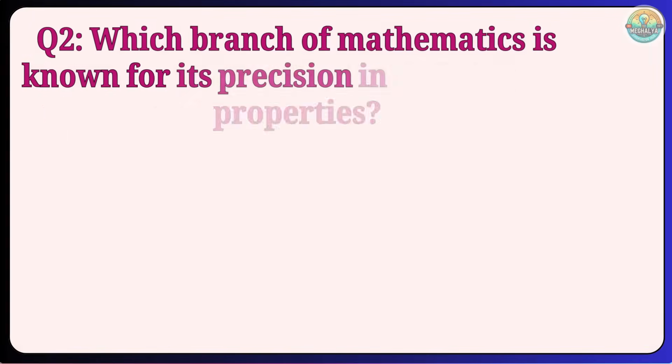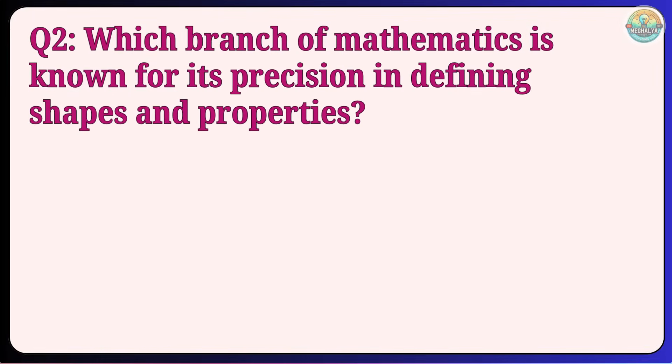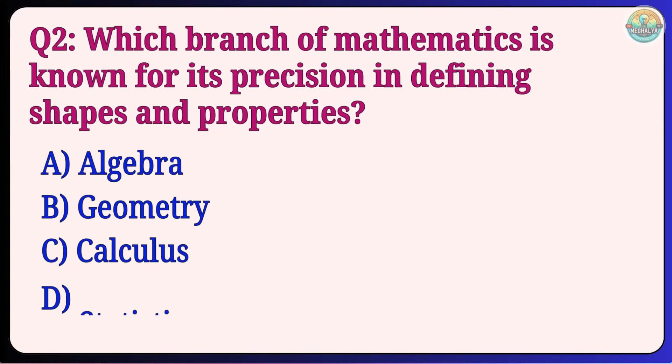Question 2: Which branch of mathematics is known for its precision in defining shapes and properties? Algebra, Geometry, Calculus, Statistics. Answer: B, Geometry.